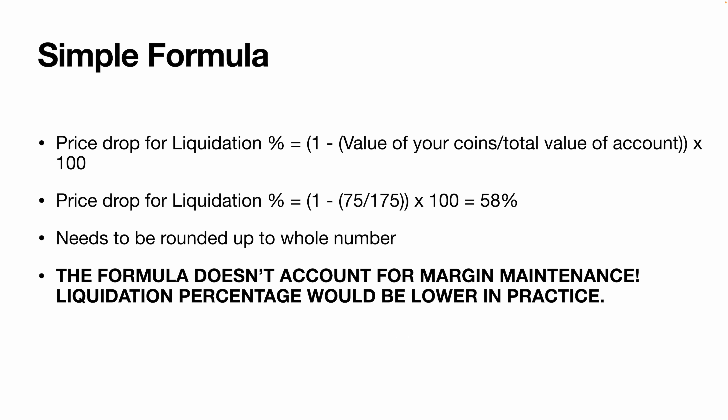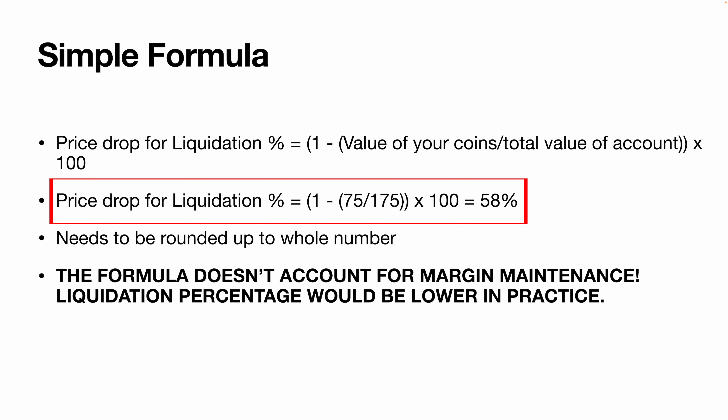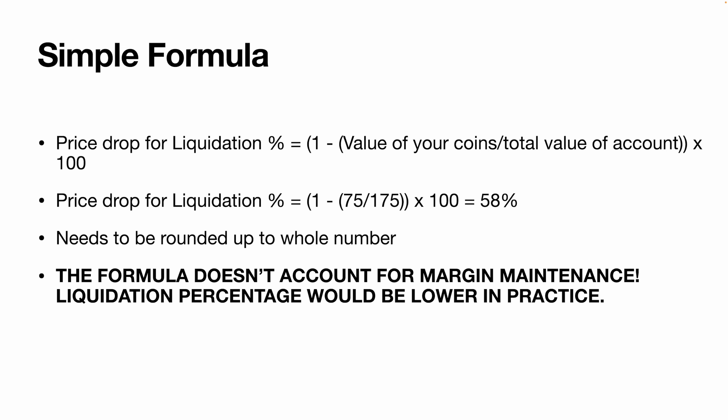Now, if the value of that Bitcoin drops to 75 USDT, that would be a price drop of roughly 58% from the price you bought in at. BitGAT would then automatically sell your Bitcoin and take back their 75 USDT that you borrowed plus any interest, meaning you're left with nothing in your account. You can determine the rough liquidation price drop using the equation shown on screen, though this is a simple formula that doesn't account for margin maintenance.